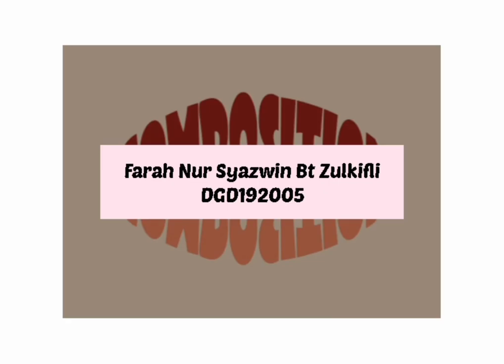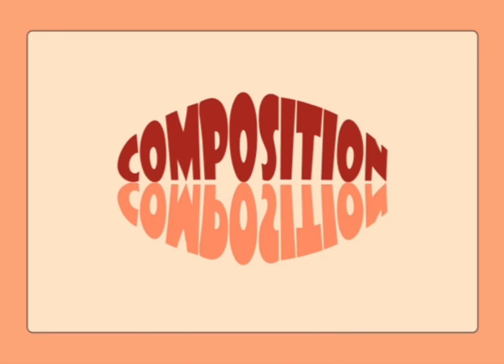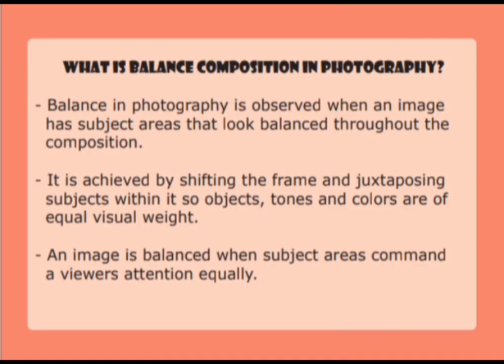Assalamualaikum everyone. My name is Fahin Syazim Binti Sukifti and my metric number is DGD192005. Now I'm going to talk about composition in photography.